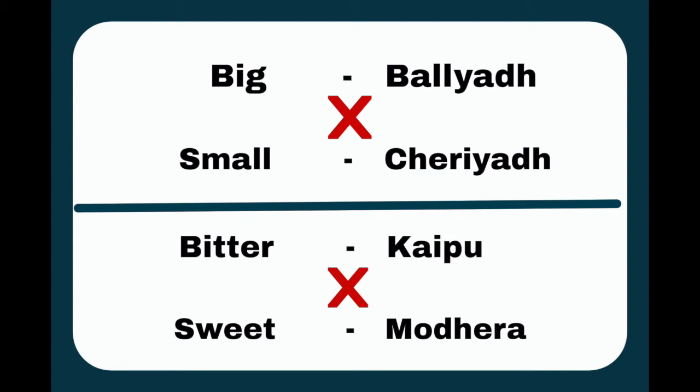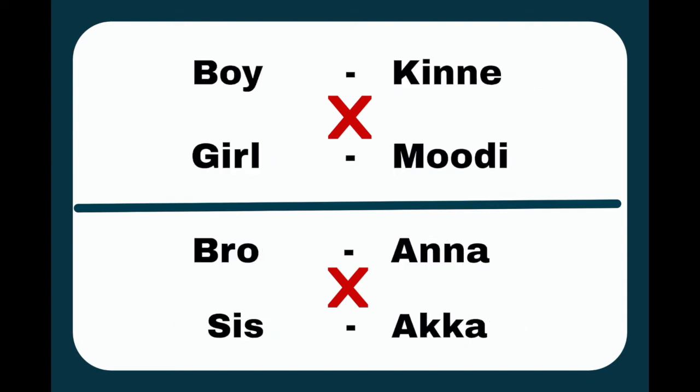Bitter — Kaipu. Sweet — Mudra. Boy — Kinna. Girl — Moody. Bro — Anna. Sis — Akka.